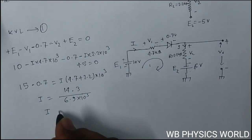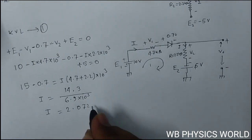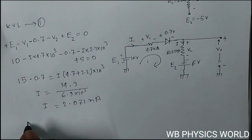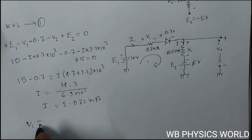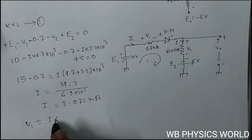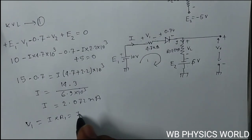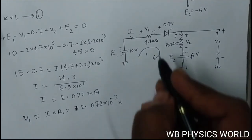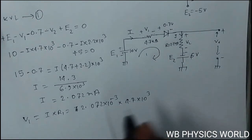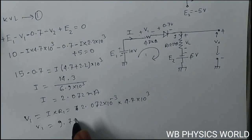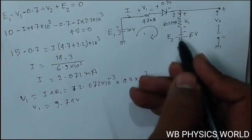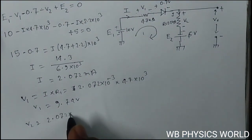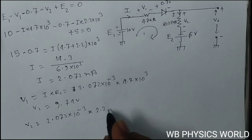So I is basically 14.3 divided by 6.9 into 10 to the power 3, giving a value of I equal to 2.072 milliampere. Now voltage across resistance R1, V1 equals I into R1, so V1 equals 2.072 into 10 to the power minus 3 multiplied by 4.7 into 10 to the power 3, giving V1 equal to 9.74 volt.